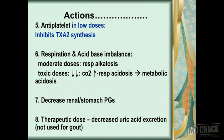The next action is anti-platelet action in low doses — as we just described, aspirin inhibits thromboxane A2 synthesis and produces anti-aggregatory action on platelets. The next action is on respiration and acid-base balance. In moderate doses, aspirin or salicylates produce respiratory alkalosis, whereas in toxic doses it leads to increased carbon dioxide, causing respiratory acidosis and metabolic acidosis.